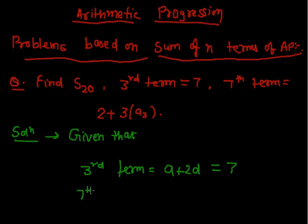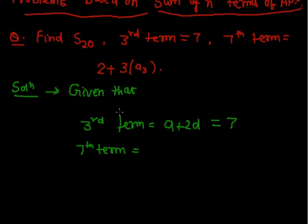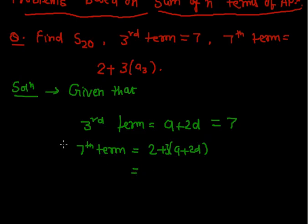Again, the 7th term is equal to 2 more than thrice the third term. That means I can write it as 2 plus 3 times the third term. The third term is A plus 2D, and since its value is 7, the expression for the 7th term becomes A plus 6D, which equals 3 times 7 plus 2, giving us 23.